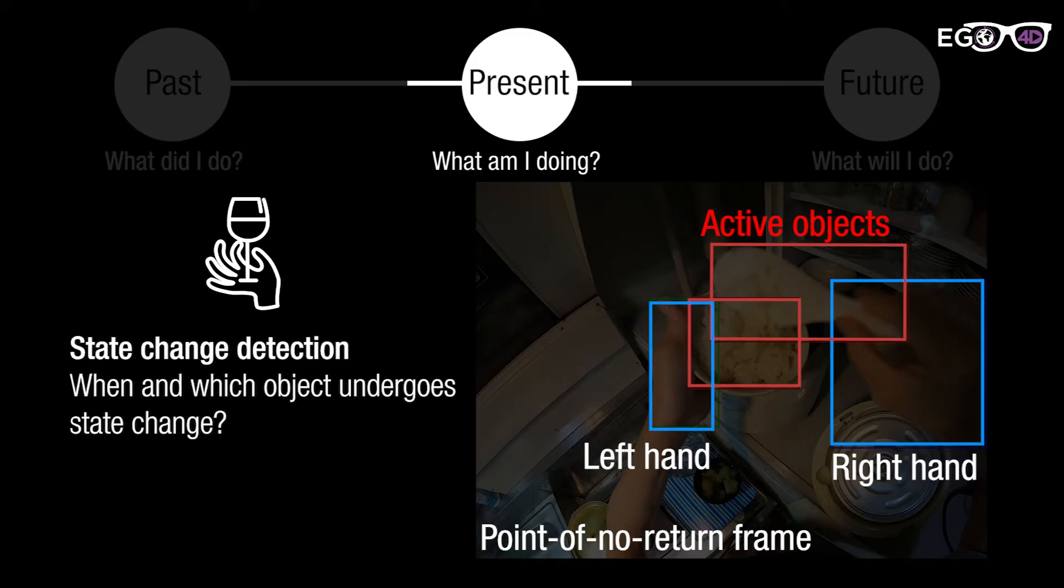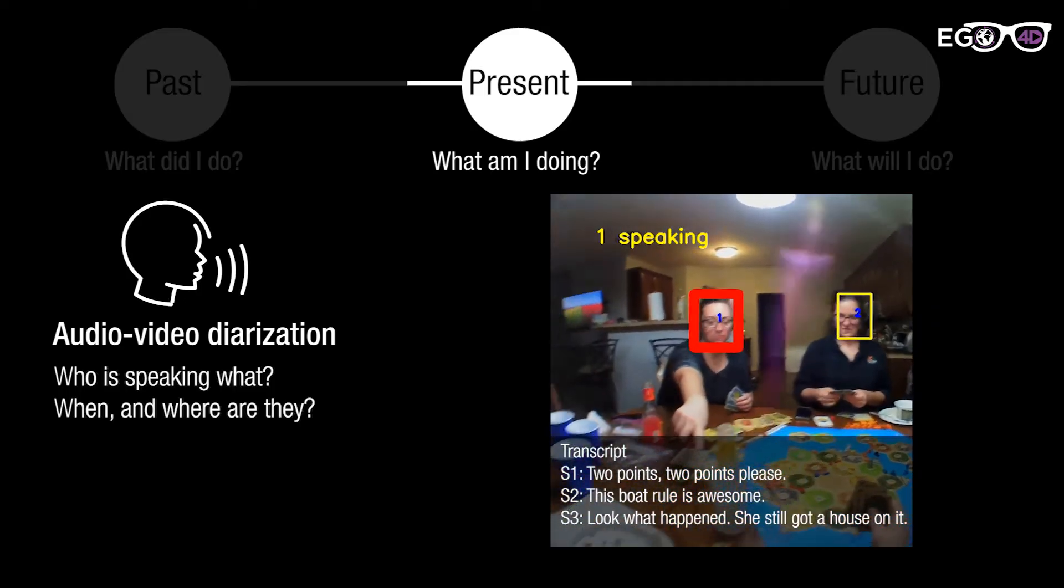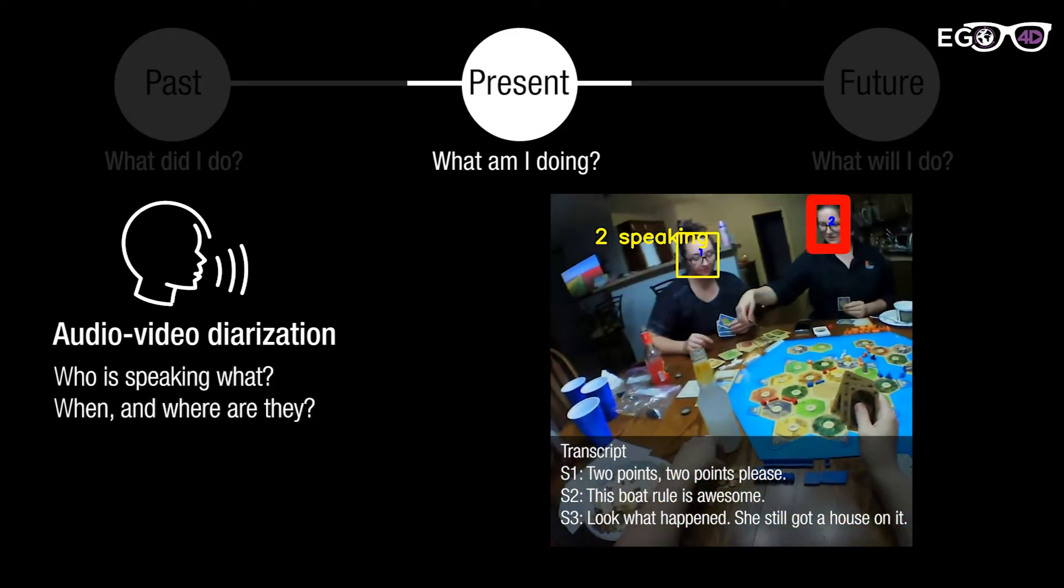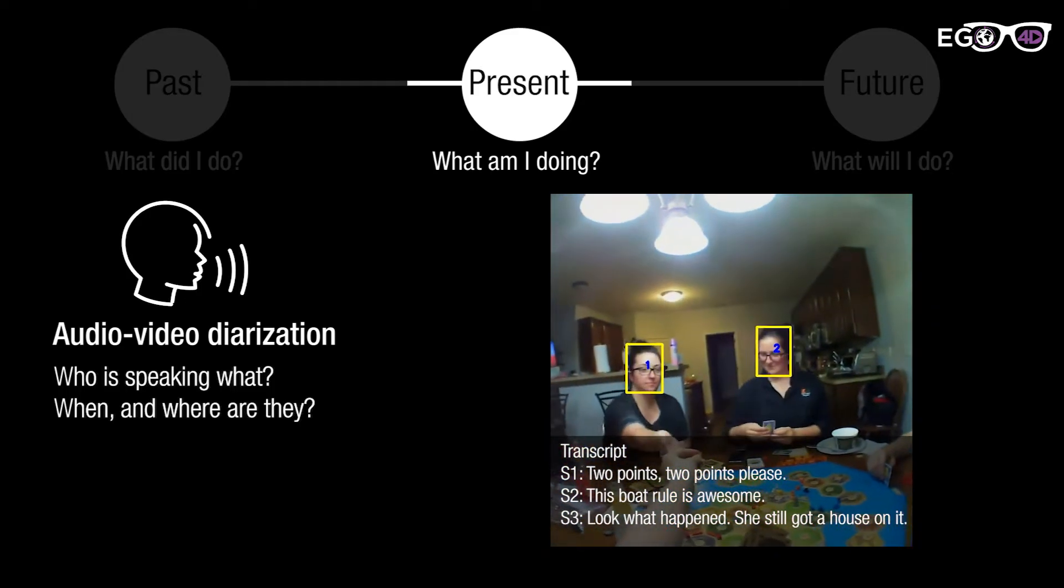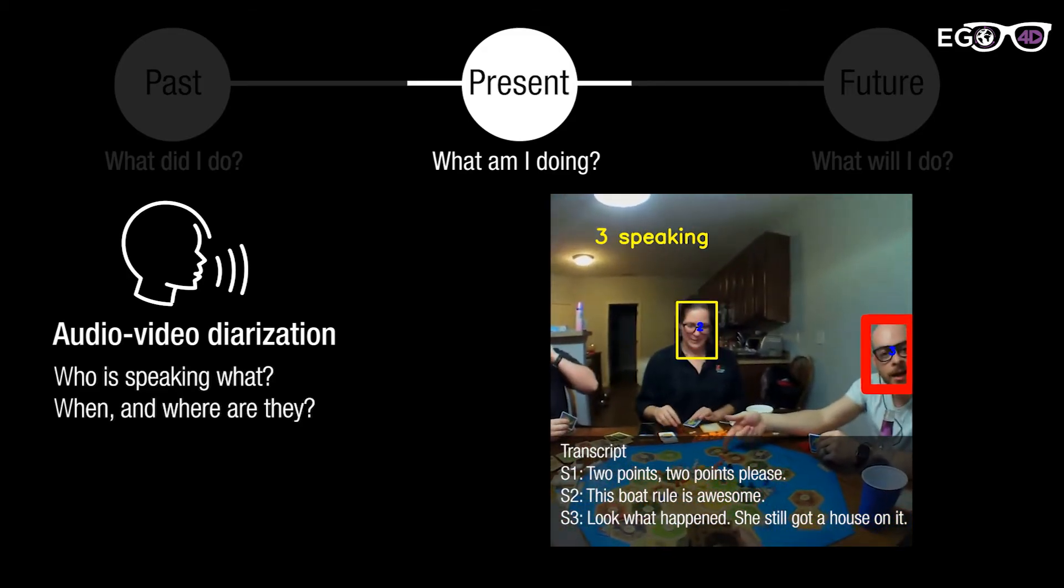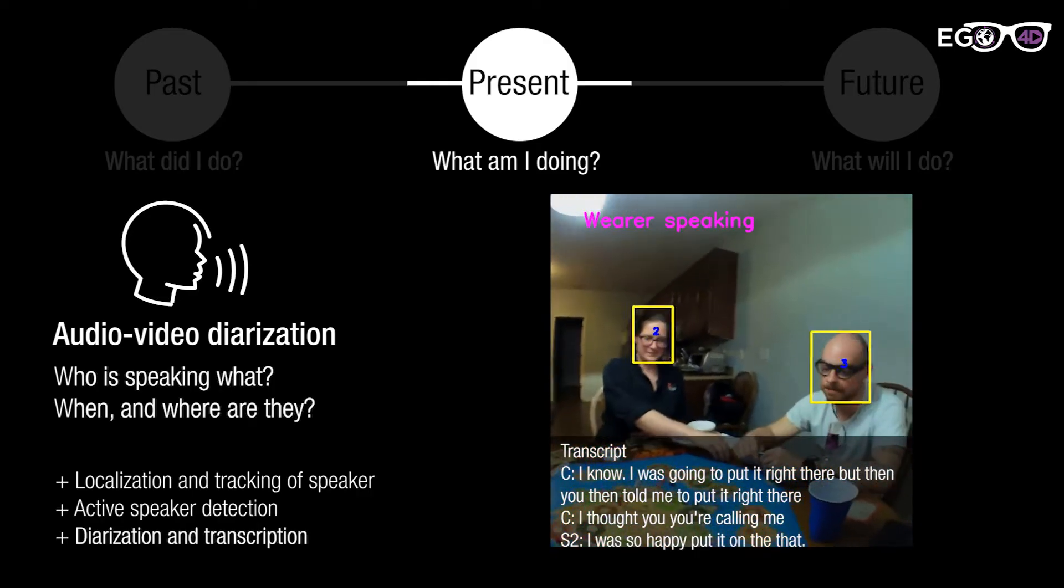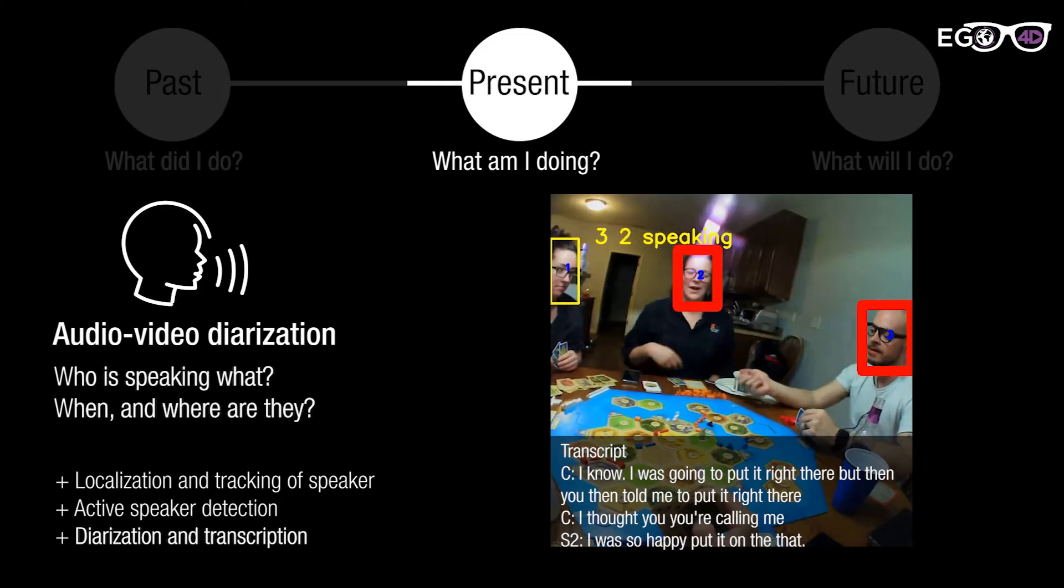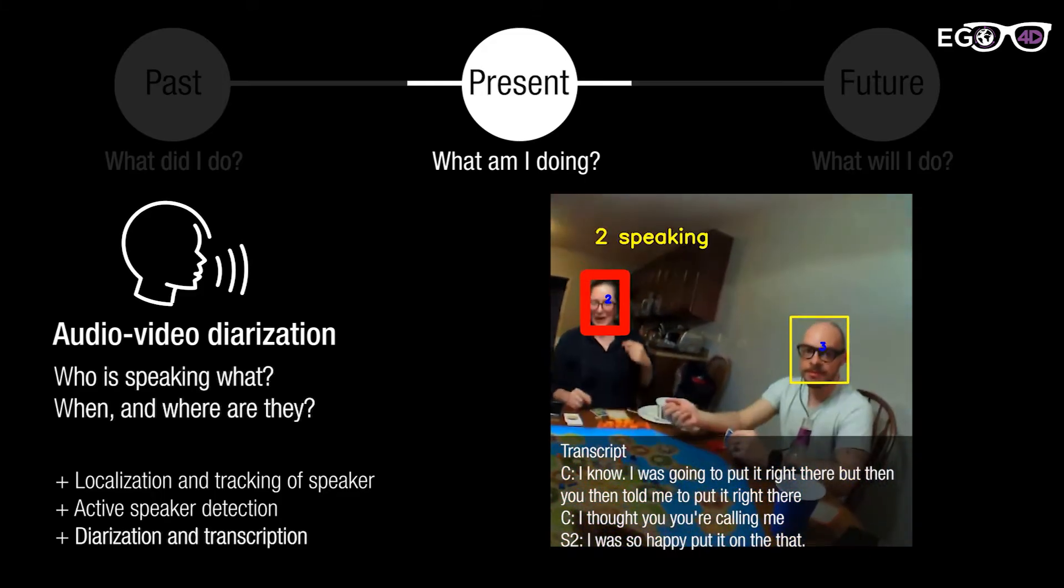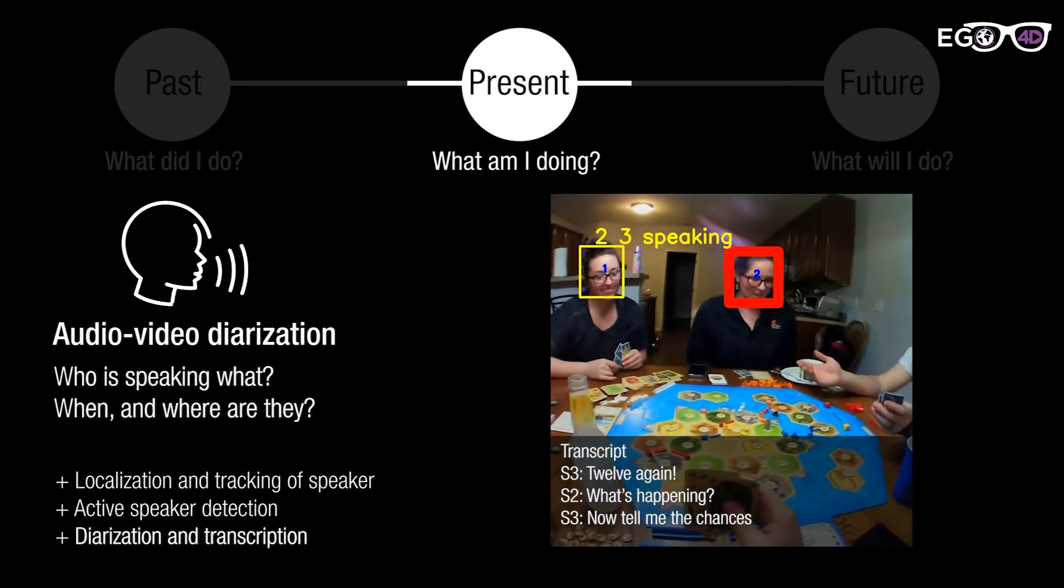An algorithm is expected to localize the state change temporally and spatially. The audio-visual diarization captures the conversational interaction dynamics from ego perspective. The benchmark focuses on who said what, when, and where are they located. The tasks of interest are localization and tracking of speakers, active speaker detection, diarization, and transcription.